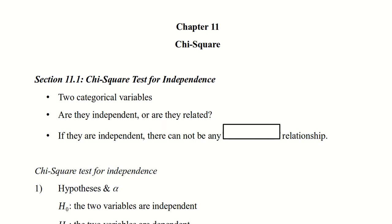In section 11.1, we're asking a question about two categorical variables. A categorical variable is something like, in our first example, gender and class. We ask the question, are they independent or are they somehow related? And if they're independent, we know that there cannot be any causal relationship. In other words, one doesn't cause the other.